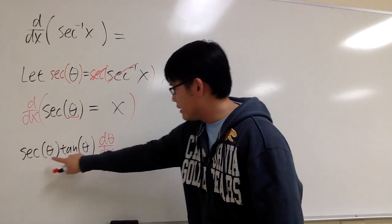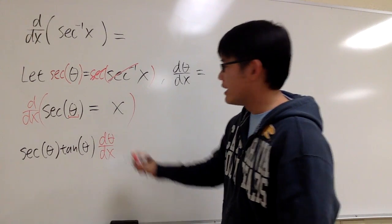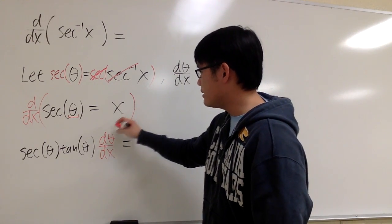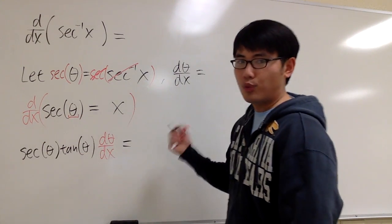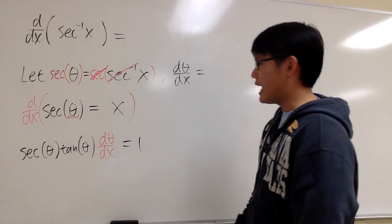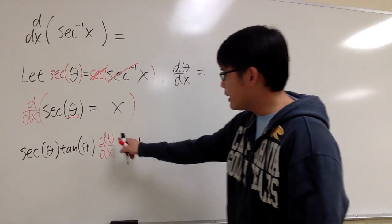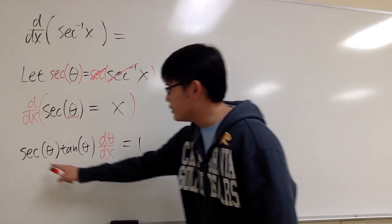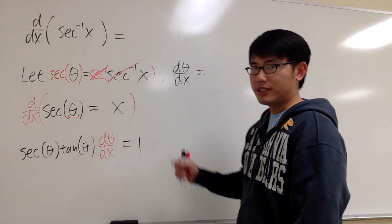This part is for the left-hand side. And that will be equal to the derivative of x with respect to x is equal to 1. So that's what we have. And to get dθ/dx by itself, we can just divide both of this on both sides.